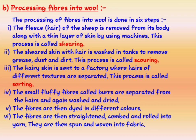Processing fibres into wool is done in six steps: Step 1 — Shearing: the fleece along with a thin layer of skin is removed using a machine. Step 2 — Scouring: the sheared skin with hair is washed in tanks to remove grease, dust and dirt. Step 3 — Sorting: the hairy skin is sent to a factory where hairs of different textures are separated. Step 4 — Cleaning burrs: small fluffy fibers called burrs are separated, then washed and dried again. Step 5 — Dyeing: the fibers are dyed in different colors. Step 6 — The fibers are straightened, combed, rolled into yarn, then spun and woven into fabric.